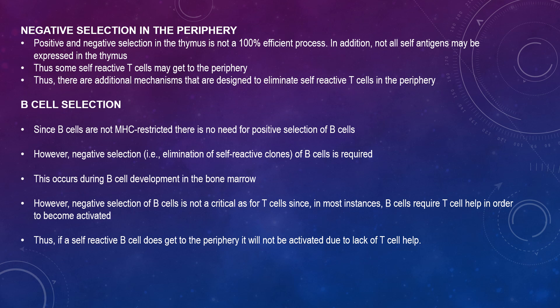This occurs during B cell development in the bone marrow. However, negative selection of B cells is not as critical as for T cells. In most instances, B cells require T cell help in order to become activated. Therefore, if a self-reactive B cell does reach the periphery, it will not be activated due to lack of T cell help.